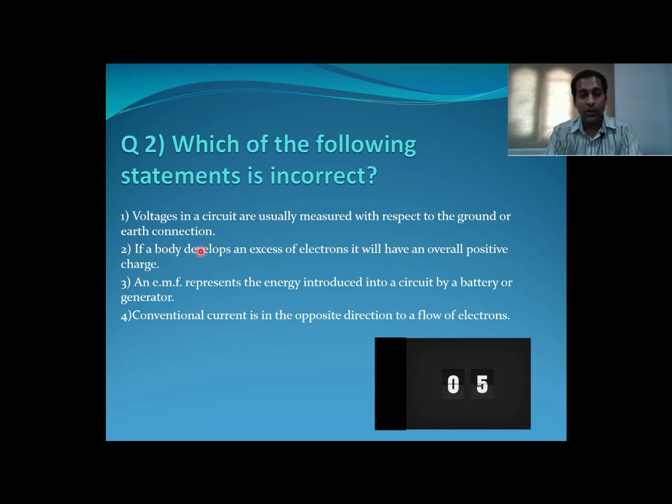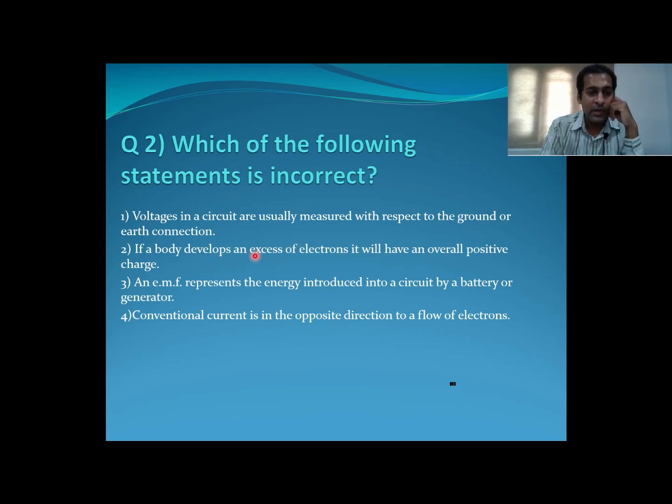Now second one: If a body develops an excess of electrons, it will have an overall positive charge. The electrons have negative charge on them. If we have excess of electrons, the part will become negative, it will not become positive charge. So this particular second statement is incorrect.